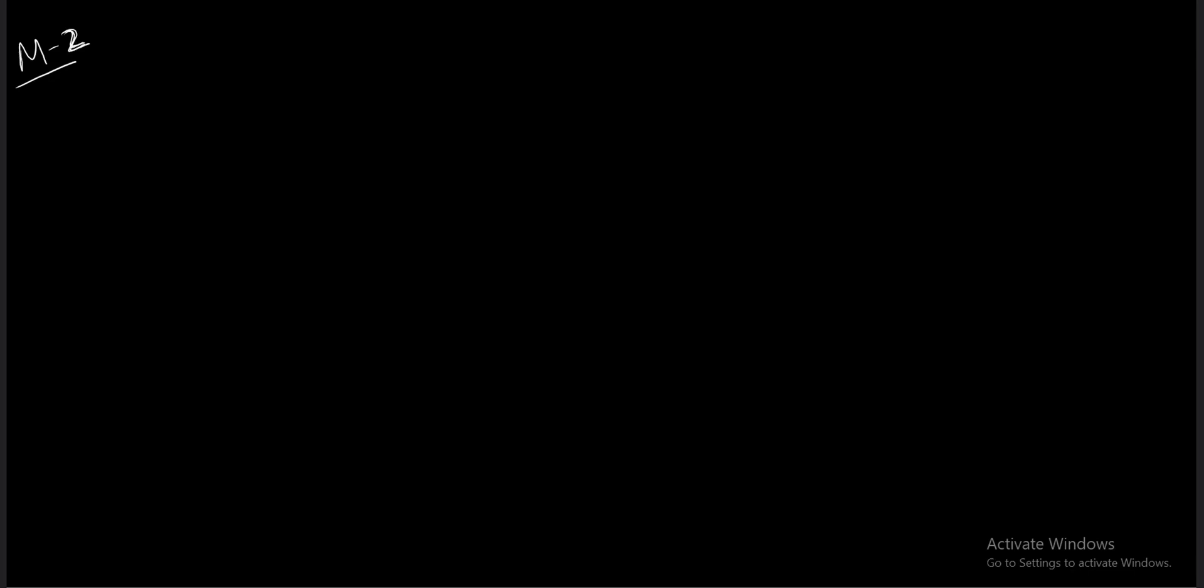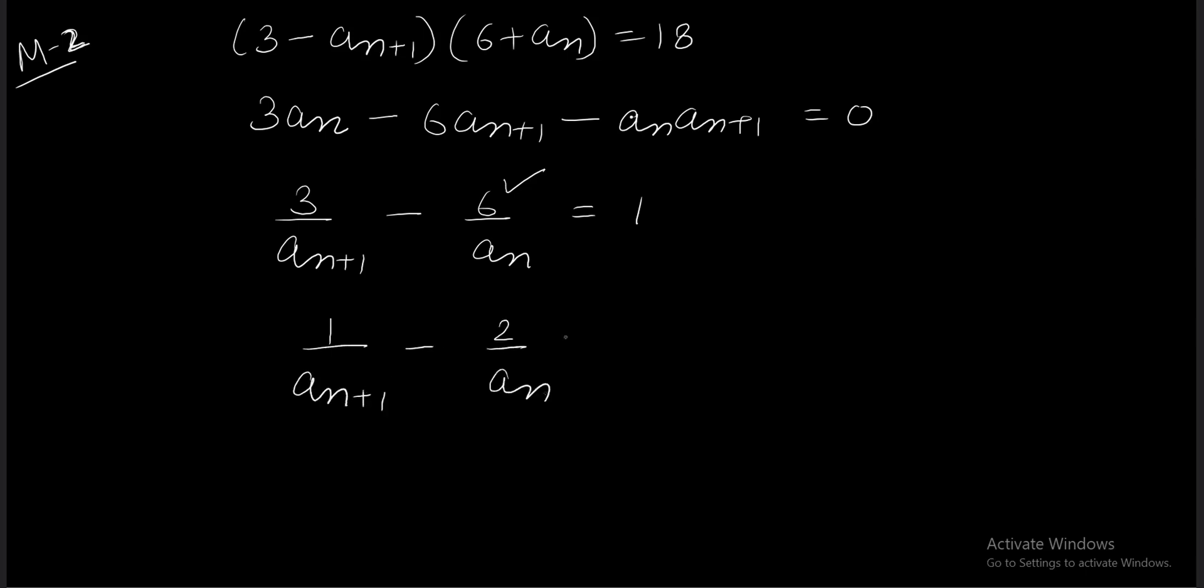The second approach: we club the GP concept here. Although method 1 is comfortable, method 2 is also not difficult. We had 3 - a_{n+1} multiplied by 6 + a_n = 18, which simplifies to 3a_n - 6a_{n+1} - a_n a_{n+1} = 0. Divide by a_n a_{n+1} to get 3/a_{n+1} - 6/a_n = 1. Taking 3 common: 1/a_{n+1} - 2/a_n = 1/3.